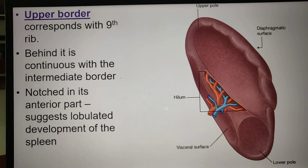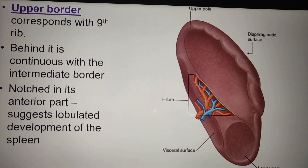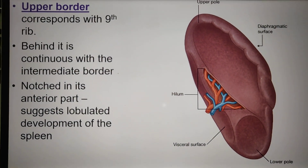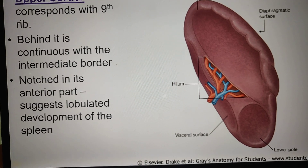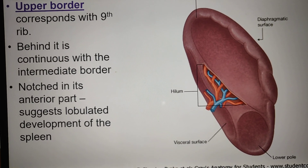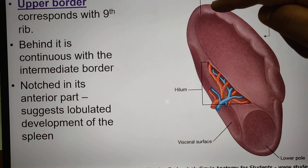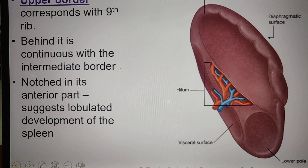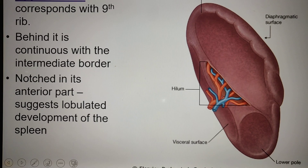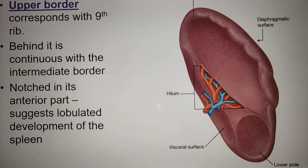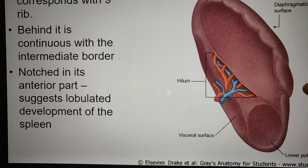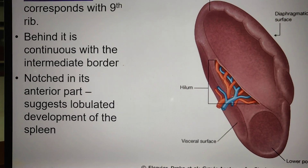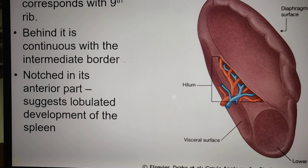The upper border is related to the 9th costal cartilage and the 9th rib behind. It is continuous with the intermediate border. The notch present in its anterior part is a feature that suggests the spleen, which is developed from lobules.